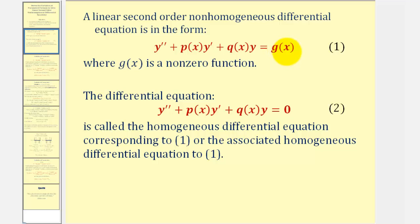We'll call the non-homogeneous differential equation equation one, and then the differential equation where the right side is equal to zero is called the homogeneous differential equation corresponding to equation one, or the associated homogeneous differential equation. We'll call it equation two.